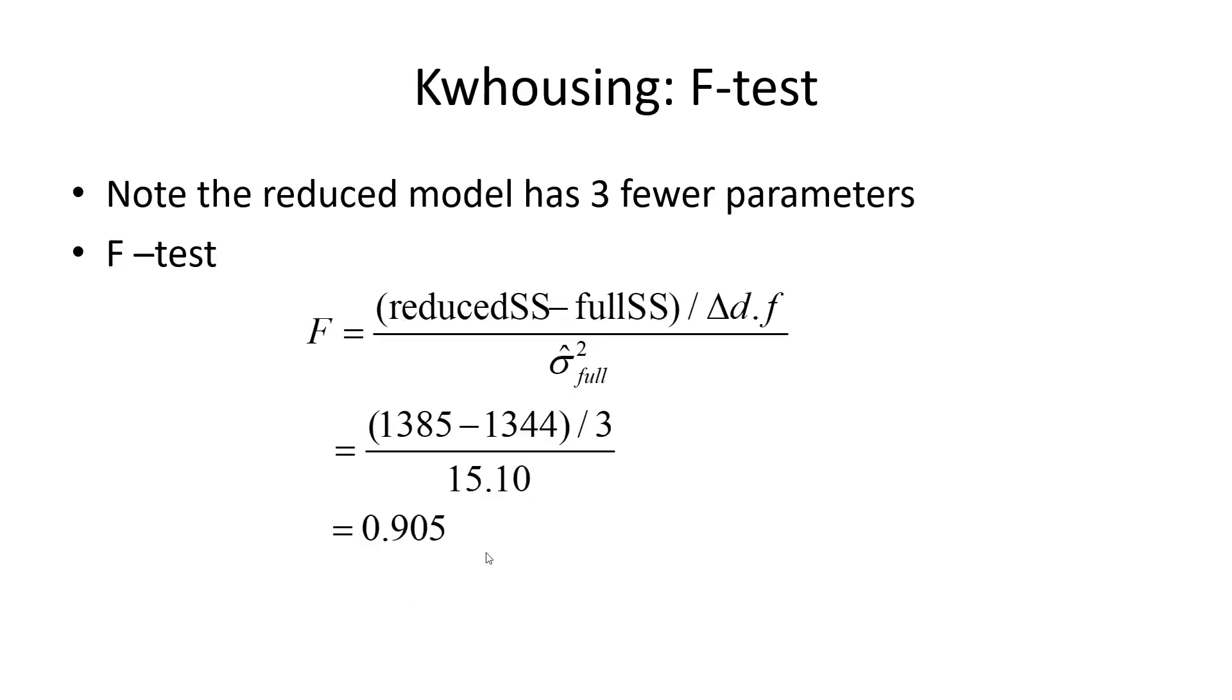Now the question is, is that large? Whether it's large depends on the distribution of the statistic under the null hypothesis. But we already know that we are comparing two estimates of sigma squared. This is the regular estimate. So if the estimate under the null hypothesis is a little smaller than the regular estimate, we probably don't have a lot of evidence to reject.